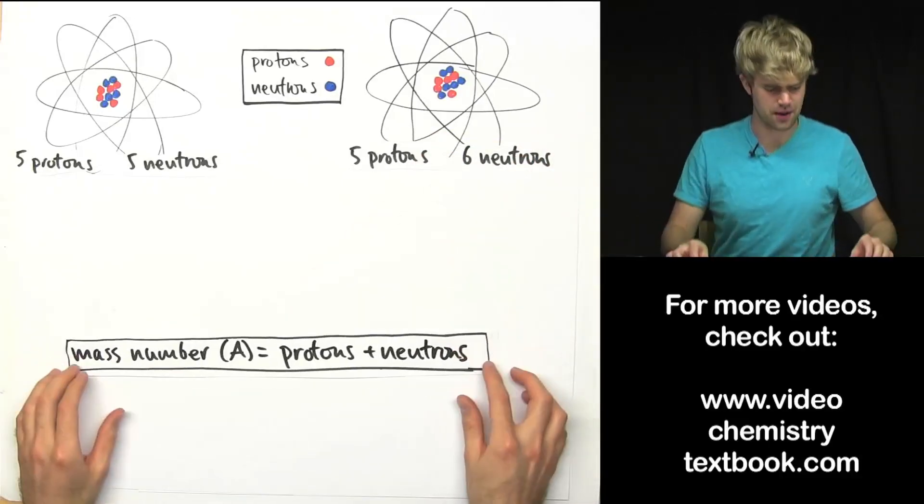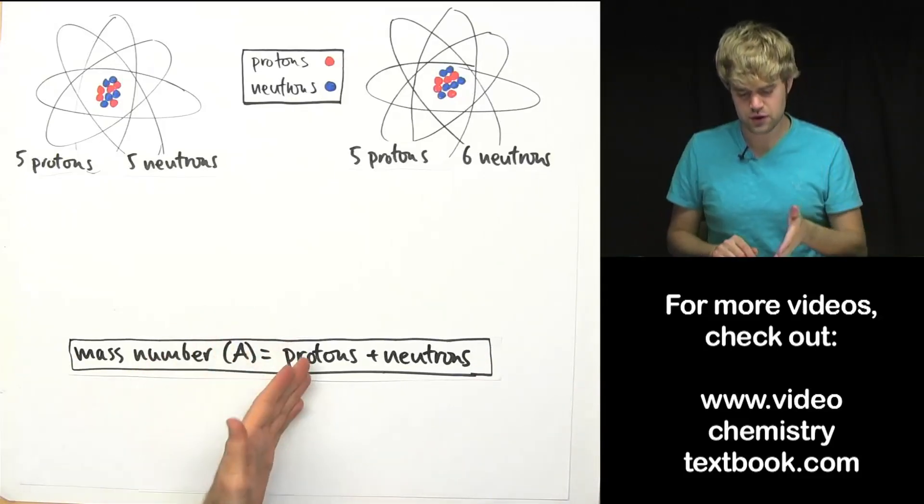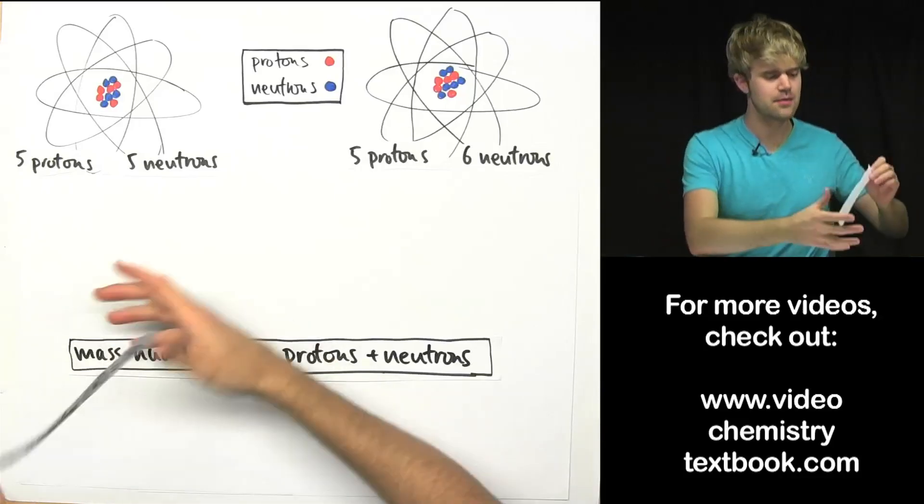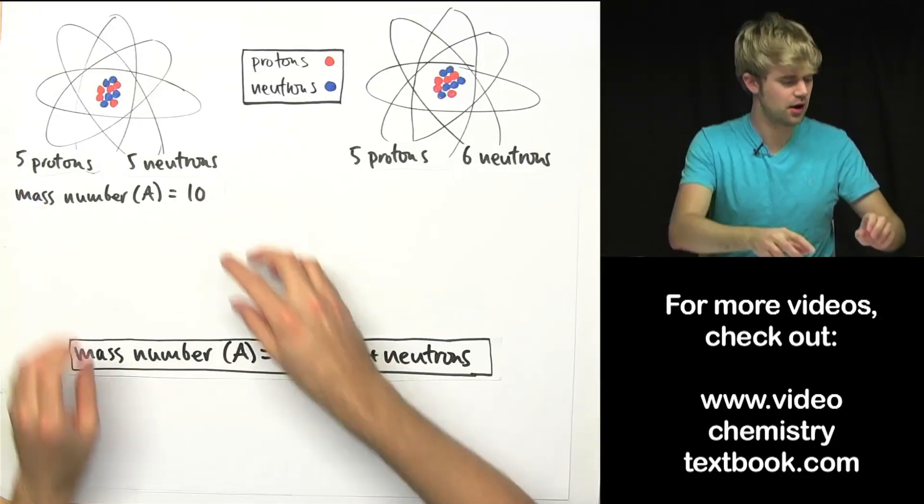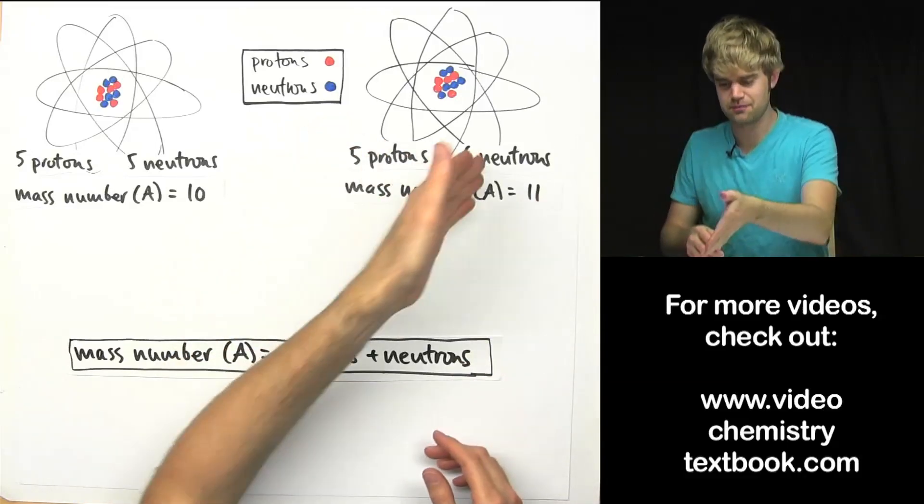So mass number, as you may remember, is the number of protons plus the number of neutrons. So the atom over here has a mass number of 10 and the atom here has a mass number of 11, 5 plus 6.